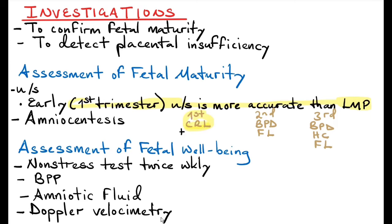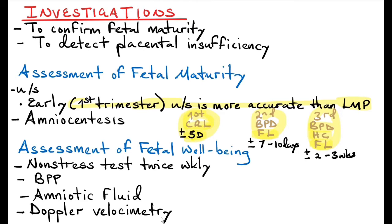The crown-rump length gives a variation of plus or minus five days from the true gestational age. In the second trimester the variation is plus or minus seven to ten days. In the third trimester, we use the biparietal diameter, the head circumference, and the femur length, which gives a variation of plus or minus two to three weeks. So the first trimester ultrasound scan is more accurate because it has less variation of only five days. As you go into the second and third trimester, the variation from the true gestational age increases.